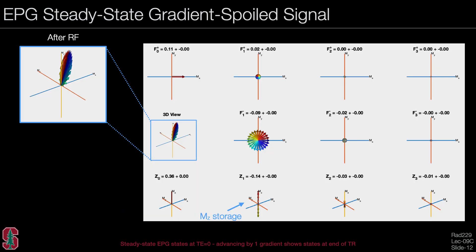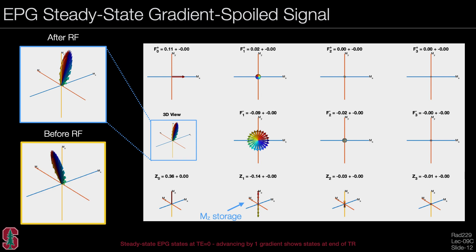Looking at the EPG state matrix diagram just after the RF pulse — where we typically sample the signal — the 3D view shows the elliptical distribution of spins for a 30-degree excitation. In the F-zero state we have some signal, and in the F-minus-one state we also have considerable signal that will be refocused — this forms the signal right before the RF. Applying one gradient shifts the EPG state, and the F-minus-one magnetization will refocus. The Z-one and Z-zero states also show considerable signal.